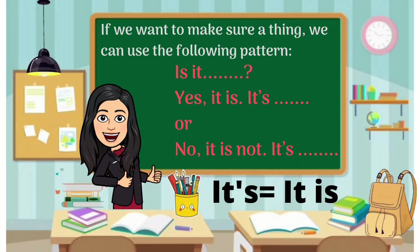If we want to make sure about a thing, we can use the following pattern: 'Is it...?' If you want to answer yes, we can say 'Yes, it is. It's...' But if you want to answer no, we can say 'No, it is not. It's...'